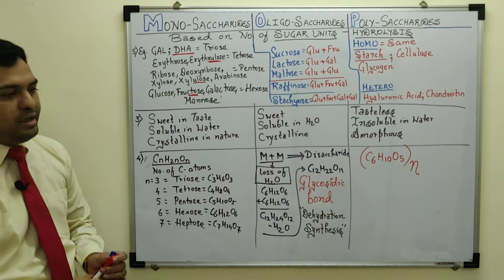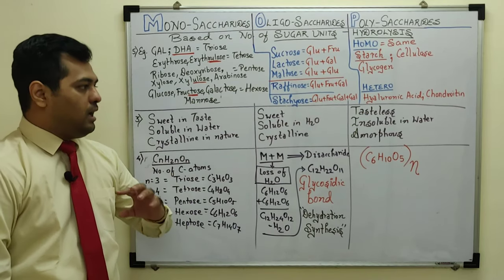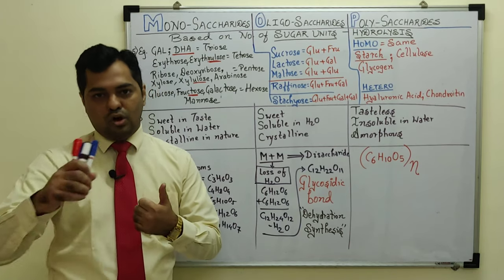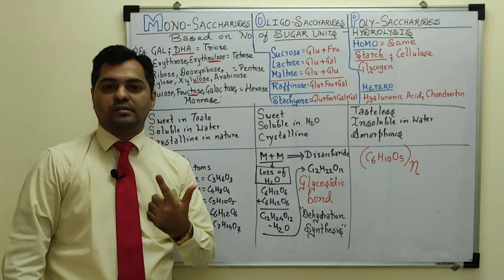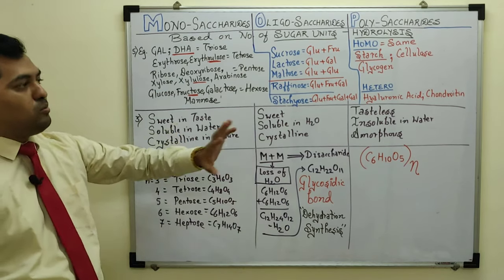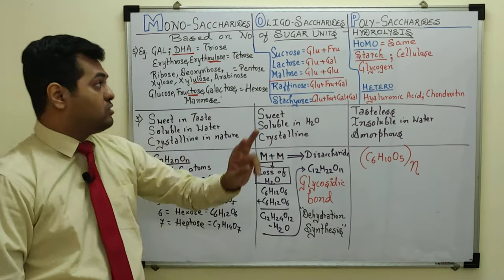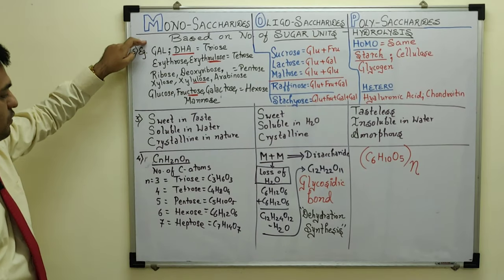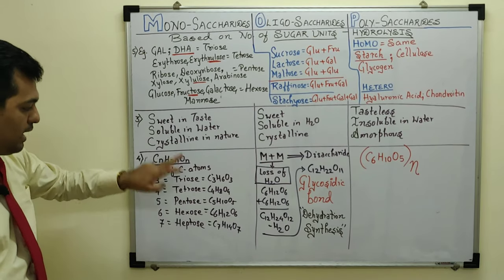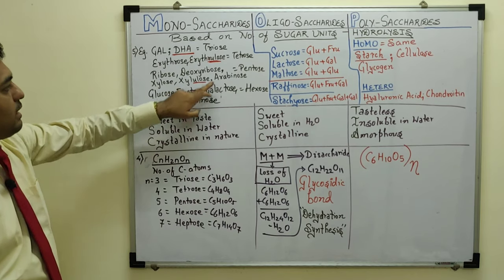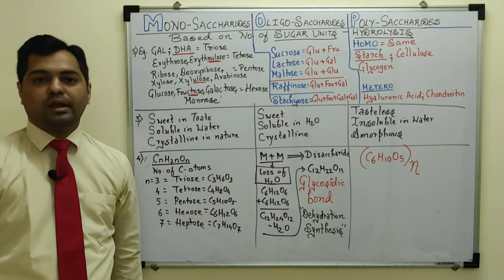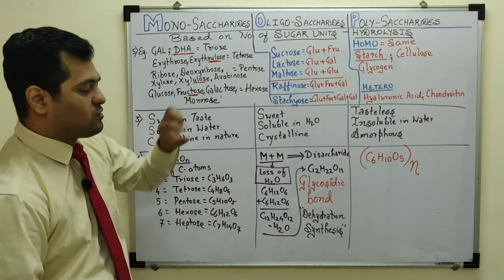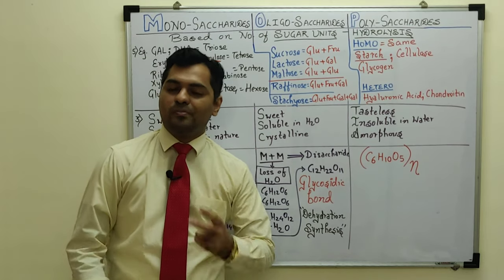To summarize today's discussion on carbohydrates: we covered characteristics and definition of carbohydrates, their properties, and classification in three ways — based on hydrolysis (mono, oligo, polysaccharides), based on number of carbon atoms in monosaccharides (triose to heptose), and based on functional groups (aldose vs ketose). Stay tuned for the next video where we will discuss the structures of glucose, fructose, galactose, and mannose in detail. That's all from Dipenism.